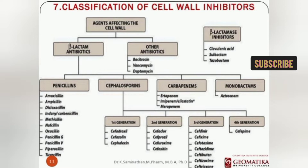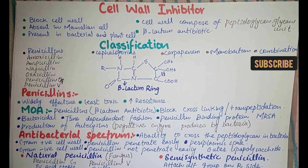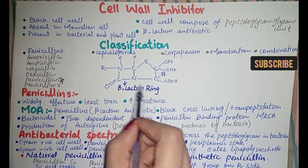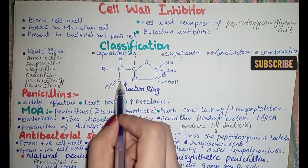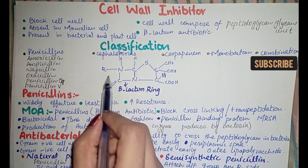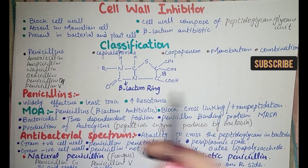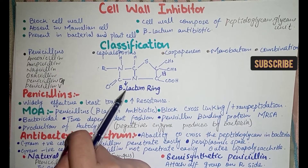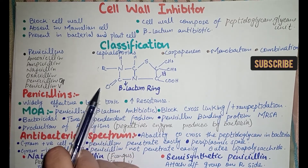We should discuss the structure of cell wall inhibitors. In this structure there is a beta-lactam ring. There is also an R side chain — jab class change hoti hai cell wall inhibitor ki, to yeh R side chain bhi change hoti hai, jis ki wajah se hame different antimicrobial effects milte hain. Agar beta-lactam ring ko destroy kar diya jaye to cell wall inhibitor ka antibiotic effect nahi milega.